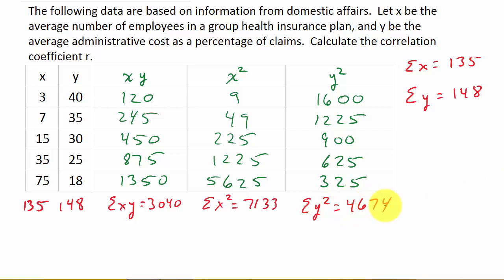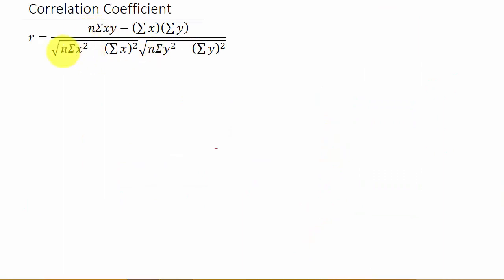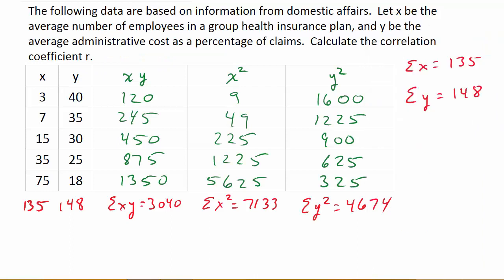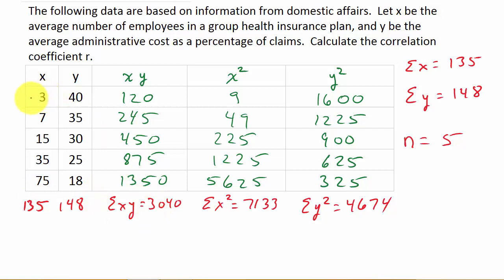We also need N from the formula — N is the number of values. In this problem, N is equal to 5. A common mistake is for students to count all the individual numbers and get 10. But N is not how many numbers there are — it's how many pairs of x and y values you have. So there are 5 pairs, meaning N equals 5.